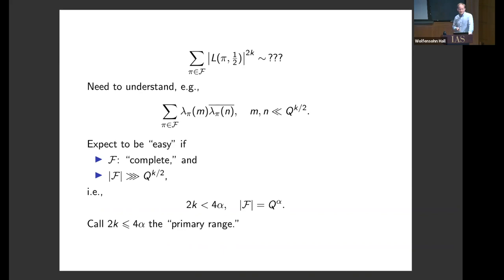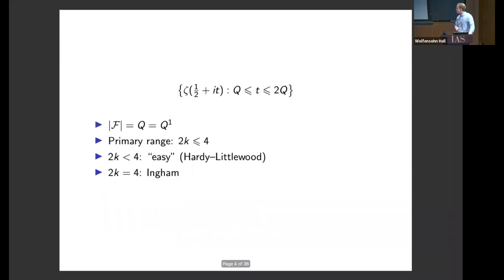Now come a slew of examples giving us practice with notation. We consider the zeta function at points between Q and 2Q. The family size is Q, which is the first power of the conductor, so the primary range goes up to four. This is work of Hardy-Littlewood and Ingham going back quite a ways.